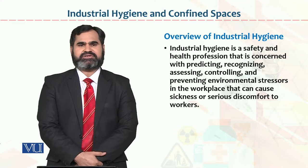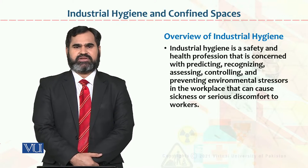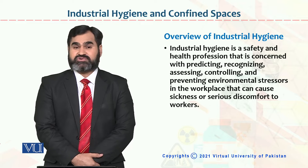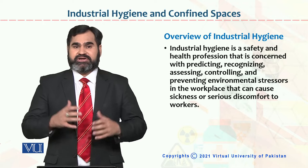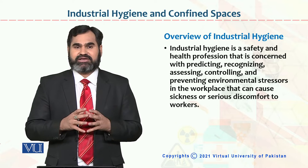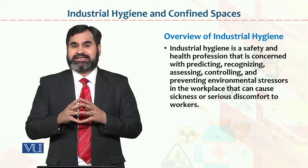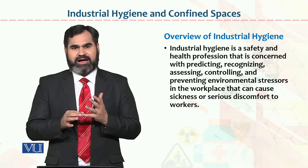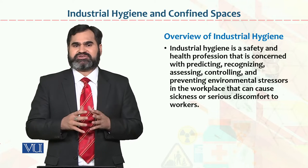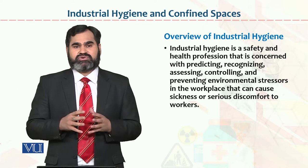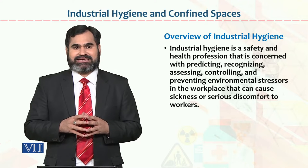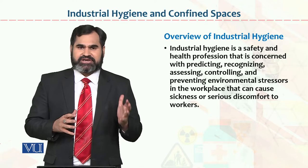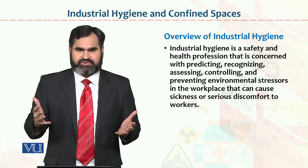Industrial Hygiene and Confined Spaces is the topic which we are going to discuss now. Industrial Hygiene क्या है, पहले इसको जानना बहुत लाजम है. Industrial Hygiene basically यह है कि जो industry है, industry कहते हैं line of production को. For example, textile industry है, वहाँ पे raw material से लेके finished products तक जो products बनती हैं वो textile की होती हैं. Cement industry के अंदर raw material से लेके finished products तक तमाम चीज़ें cement की होंगी.